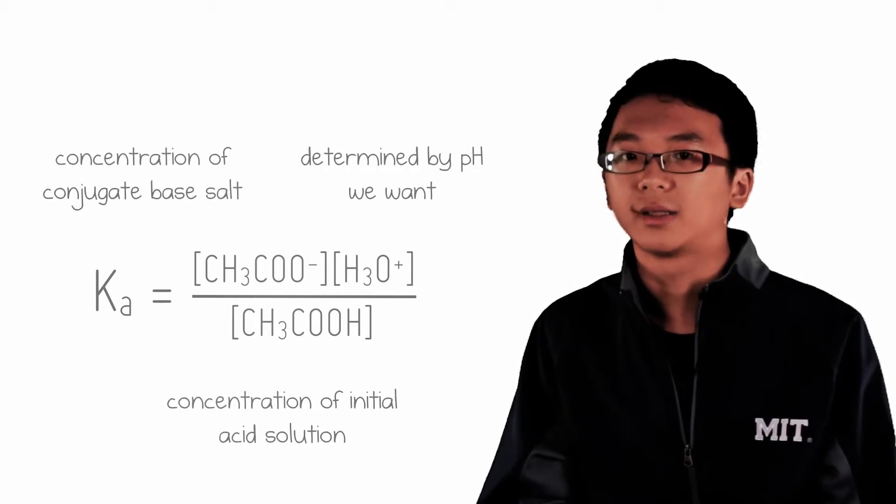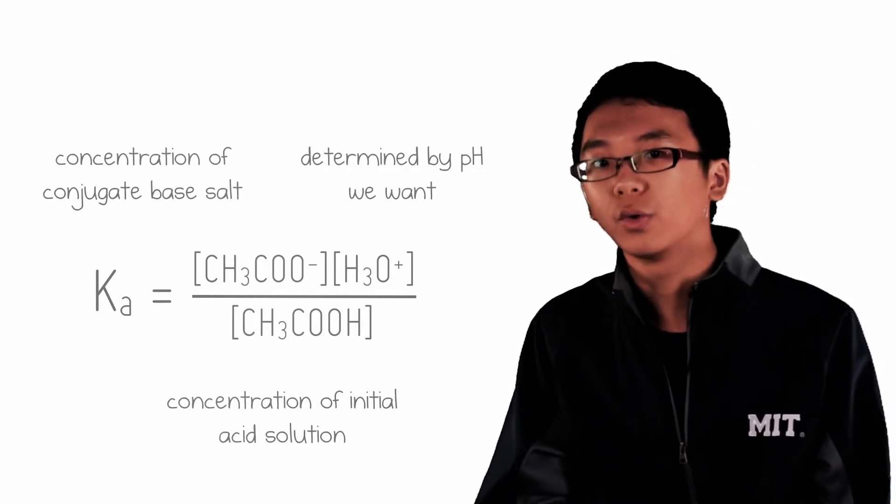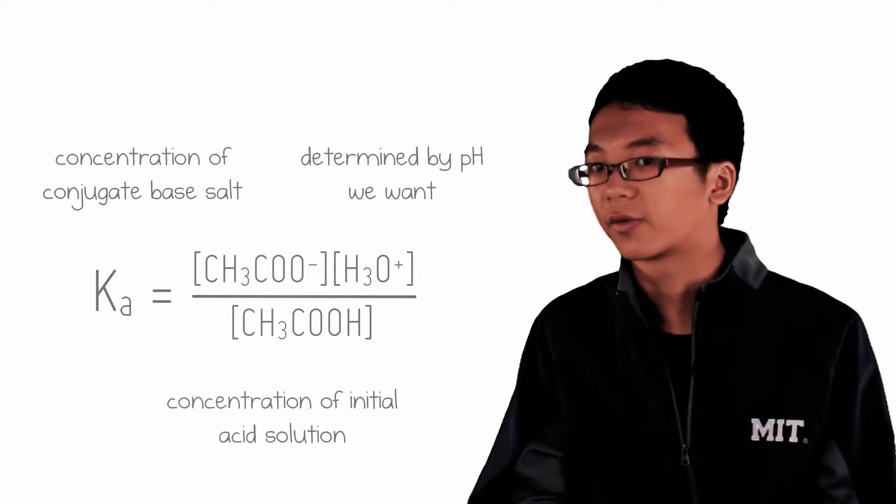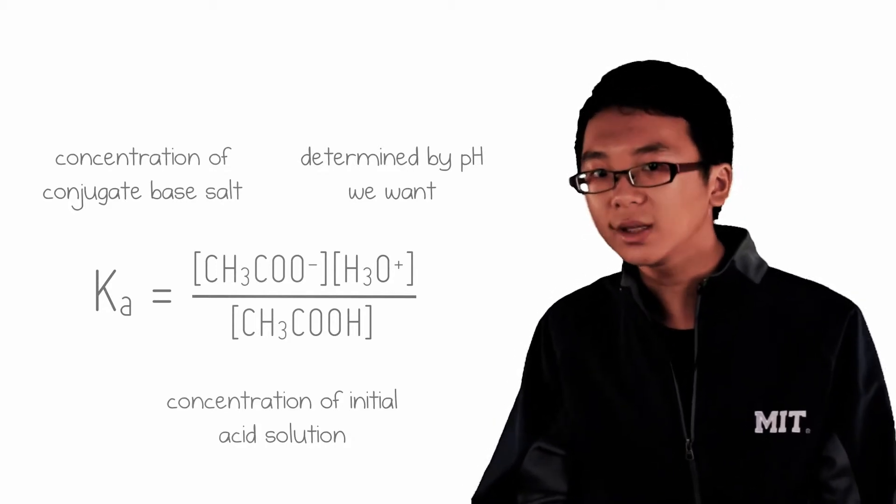here we have two compounds that form ethanoate in water. But we must realize that one is a salt and the other is a weak acid. The salt will dissolve completely. The weak acid will only dissolve partially.